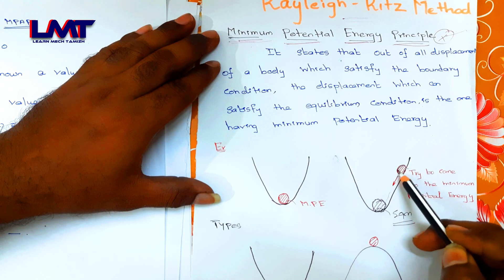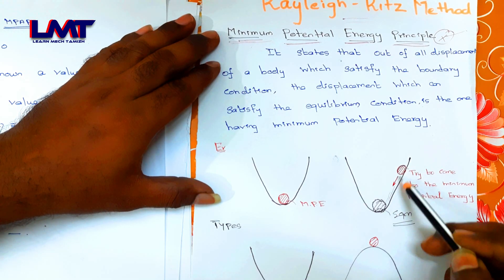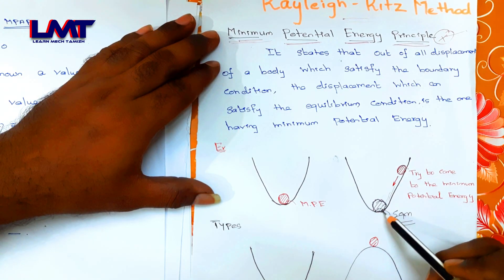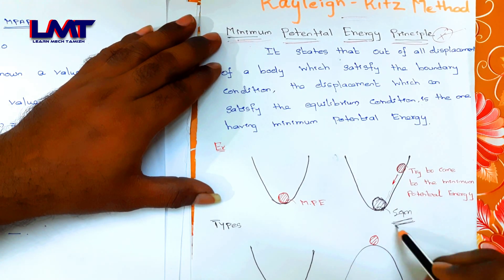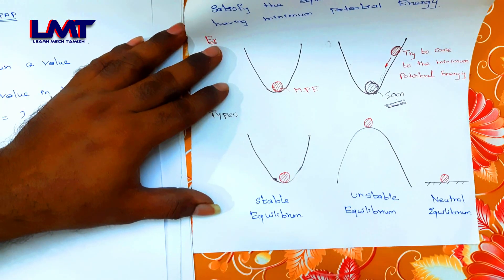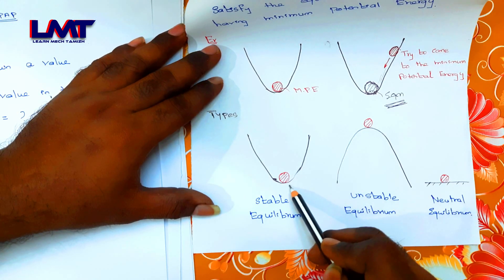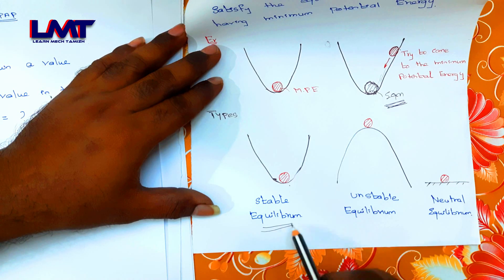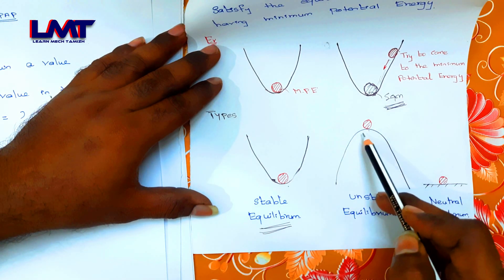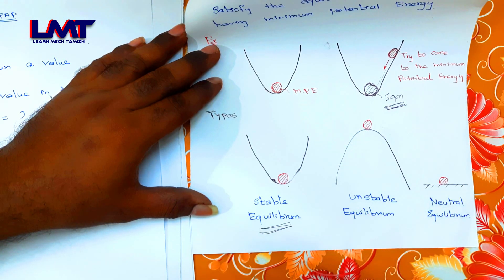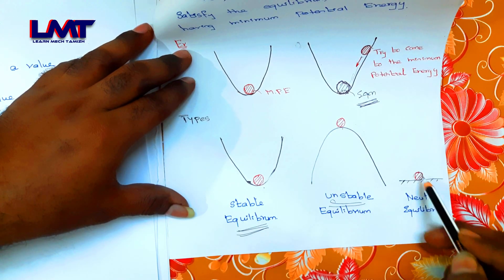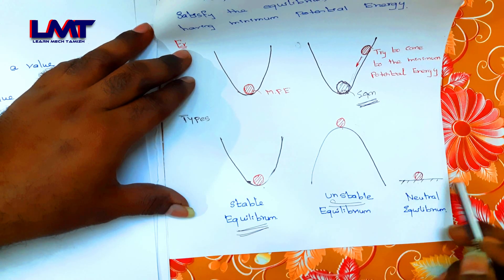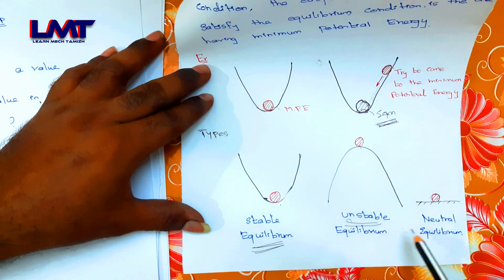Now let's talk about another example. If you take a ball in a position and release it, the ball will oscillate and come to an equilibrium position — that is the minimum potential energy and equilibrium condition. If the ball is at the bottom of a curve, it is in stable equilibrium. If you tilt it from the top, it moves away — that is unstable equilibrium. If you move it along a flat surface, that is neutral equilibrium. These are the three types of equilibrium.